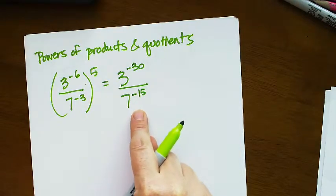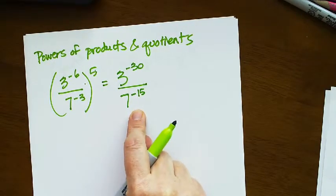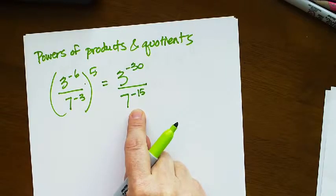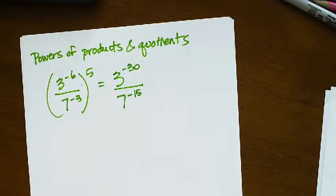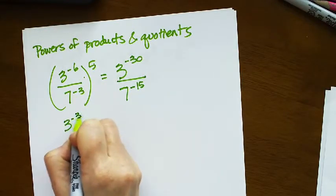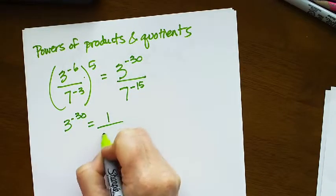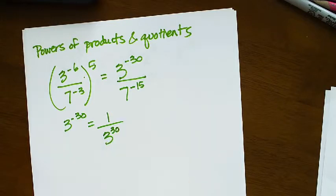Now I doubt that Khan is going to let me type this in with these negative exponents. So 3 to the negative 30 is 1 over 3 to the 30th power.